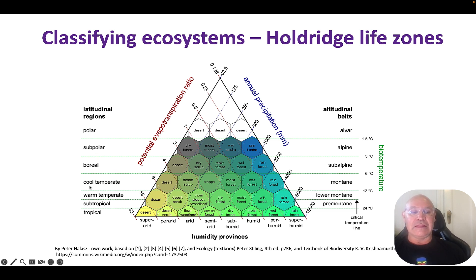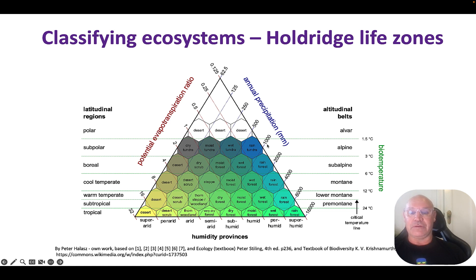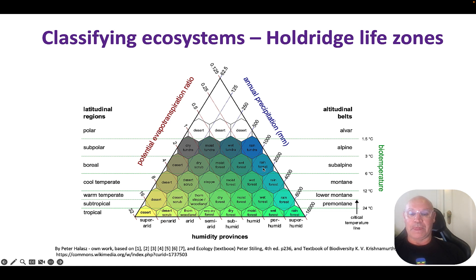Let's do one more example. Say it has an annual precipitation of 1500 millimetres and it is in a boreal latitudinal region. So 1500 millimetres places it in one of these columns, and it's boreal — so it's a rainforest. It's really as simple as that. And the other interesting thing is that if we know it's a rainforest, we can also work out that it's super humid, it's subalpine, and it has a particular potential evapotranspiration ratio. So that's the Holdridge life zone system.